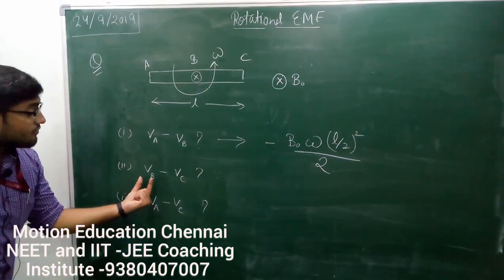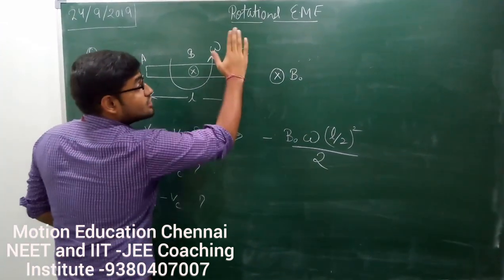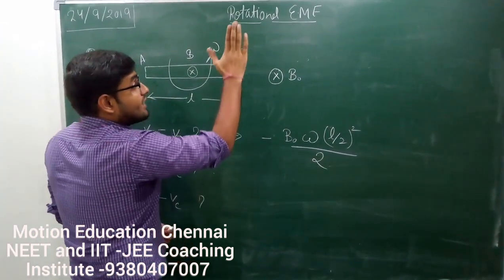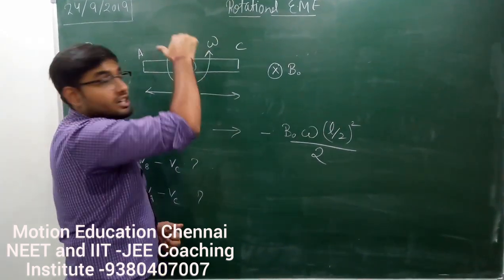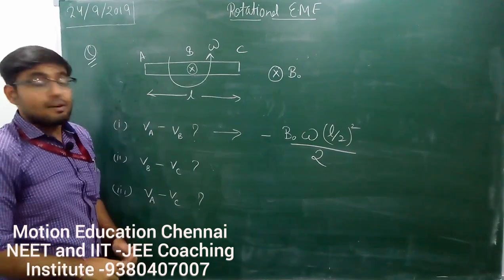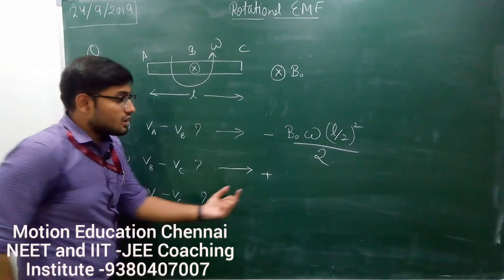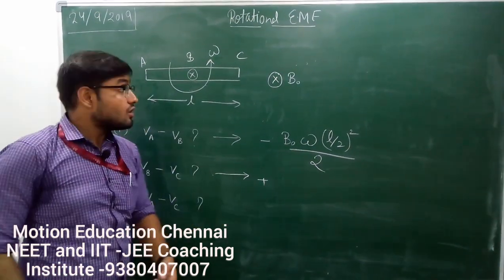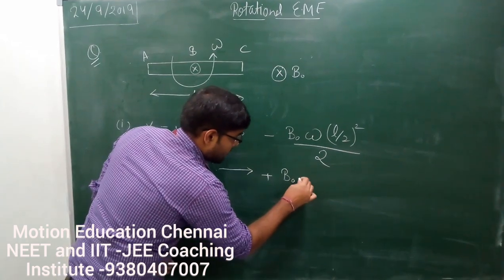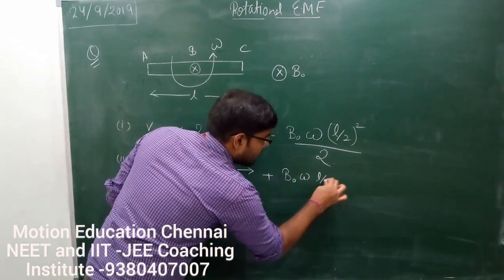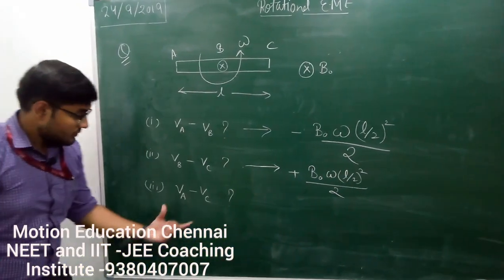The second part asks for VB minus VC. If I look at point C, the velocity of C is upwards and V cross B will be directed towards the left, so B point is at higher potential. Therefore this quantity will be positive. The magnitude will be the same as above: B₀·omega·(L/2)²/2.